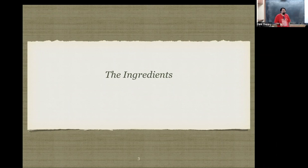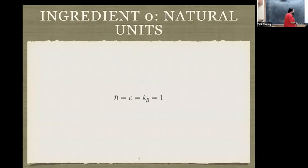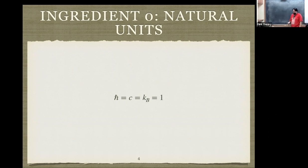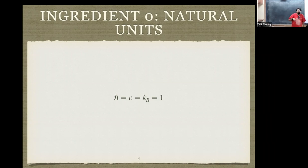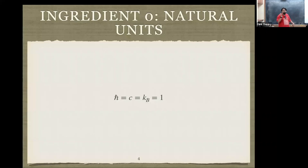Let's begin with some ingredients. The zeroth ingredient is natural units. For me and my entire field, the speed of light, Planck's constant, and Boltzmann constant are all set to one. So if any equations don't make dimensional sense, there's a 10% chance I wrote the wrong thing and a 90% chance these unit conventions are coming into play. With these assignments, there is only one dimension in the world, which is mass — mass is inverse length and length is time.